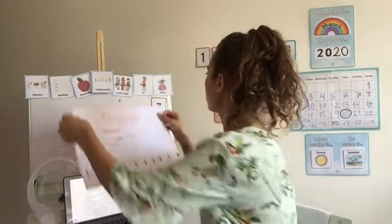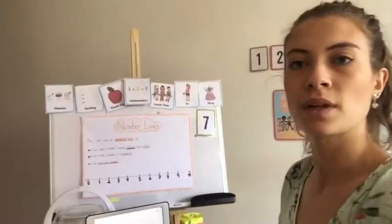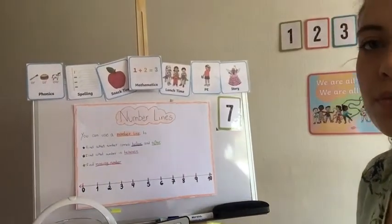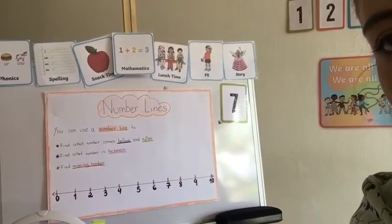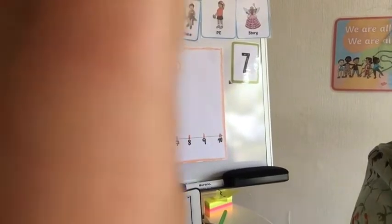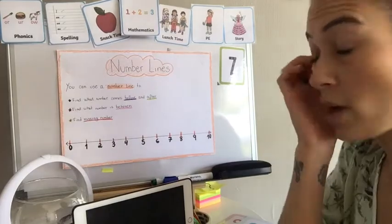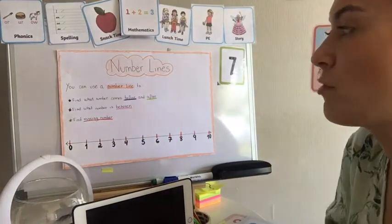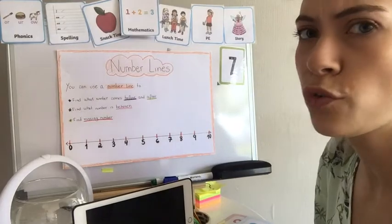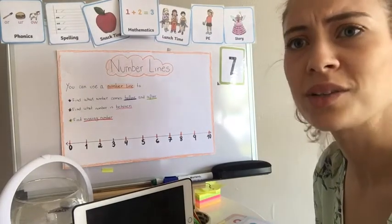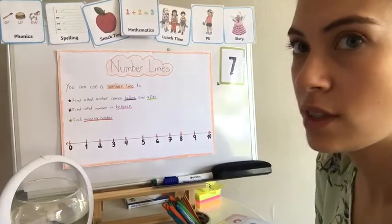Can you see it? Let me get the camera closer. Guys, how can we use a number line? We can use a number line in many ways. For now, we are going to use it to recognize the number before and after, the number between two numbers, and to find a missing number. A lot of things we can do with the number line! I want you guys to help me find the number that comes before and after the number I'm going to put the sticker on.